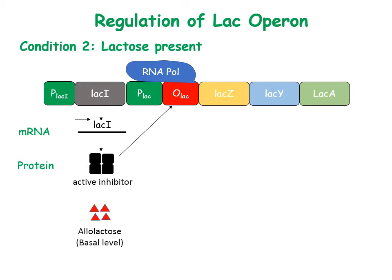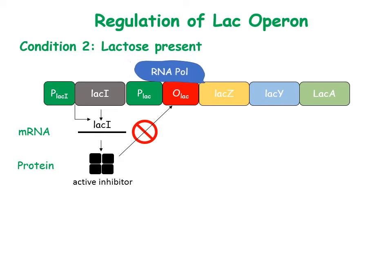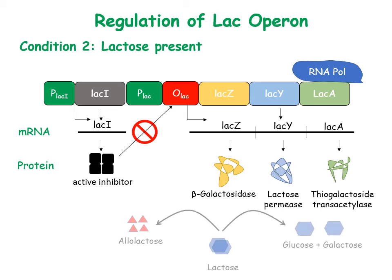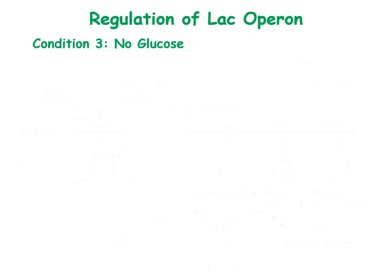Condition 2: When lactose is present, allolactose — the inducer of the LAC operon — binds to and changes the conformation of the LAC repressor, preventing its binding to the LAC operator. The RNA polymerase is then free to transcribe the LAC genes, which breaks down lactose and also produces more allolactose.